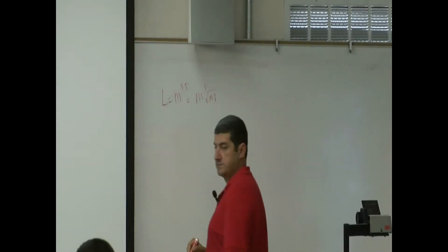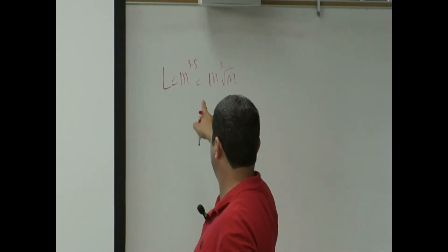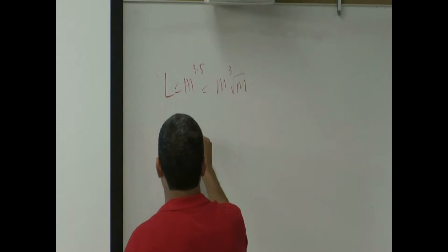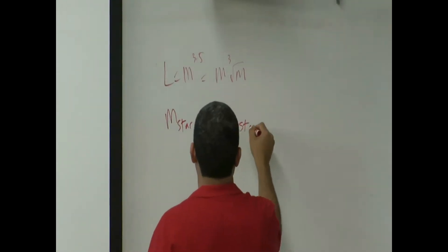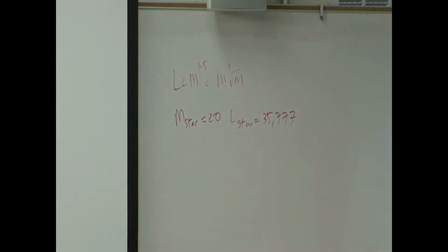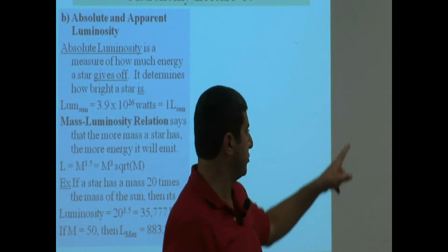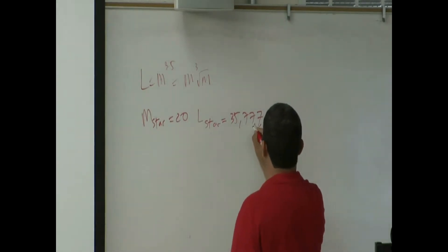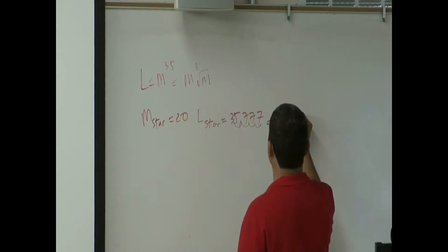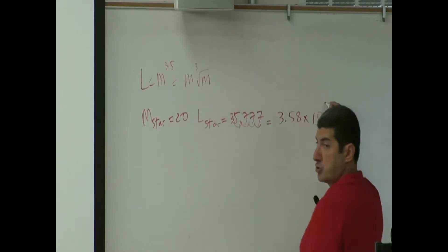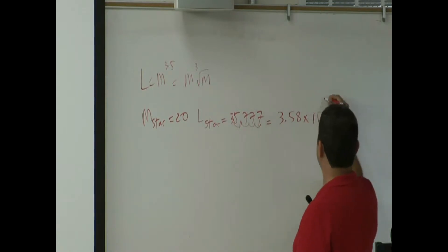m to the 3.5 equals m cubed times the square root of m — that's the same thing. So if the mass of the star is 20, the luminosity of the star is 35,777, about 35,000 times as bright as the Sun. Data tables would write this in scientific notation: moving the decimal back 4 places gives 3.58 times 10 to the 4th power.